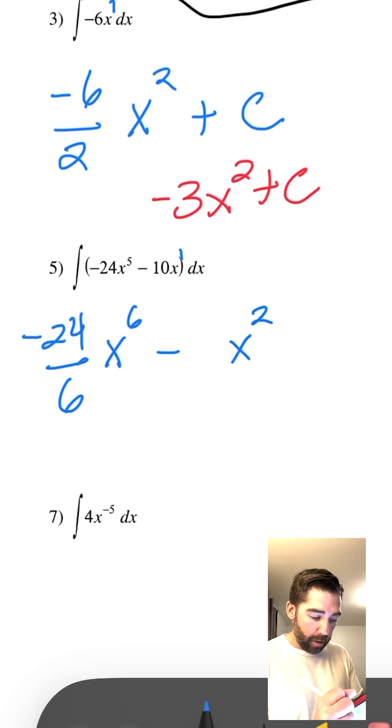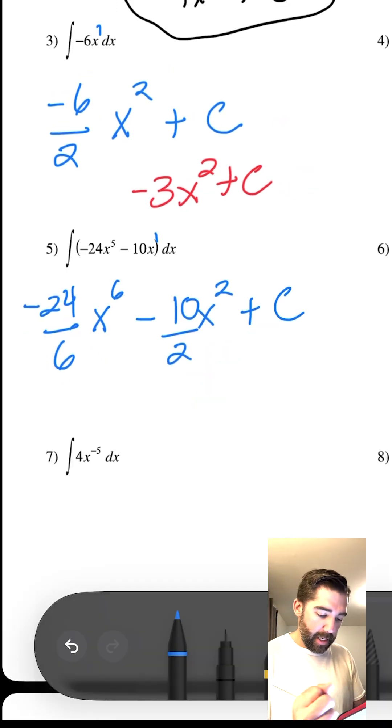Now x squared means we're going to divide by 2, bring down that 10, plus c, and let's simplify. Negative 24 over 6 is negative 4x to the 6th minus 10 over 2 is 5x squared plus c.